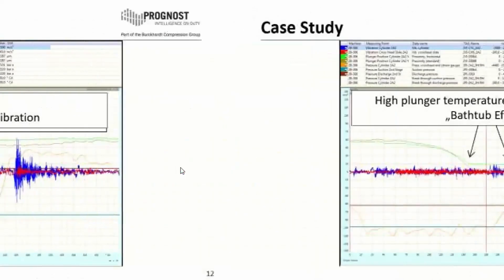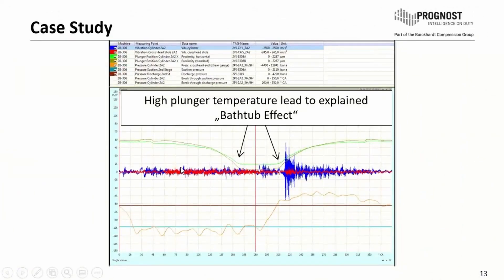At the time when the event occurs, we have high temperature and this high temperature leads to the typical bathtub effect. You see it here, the brown and green we saw before in the slides. This is of course because the temperature of the plunger was high.